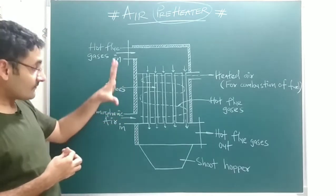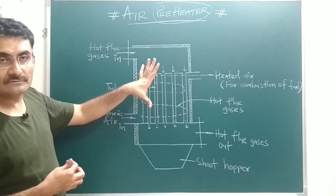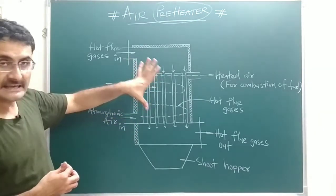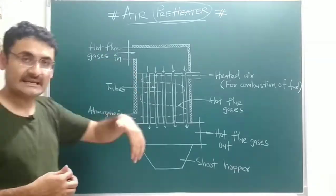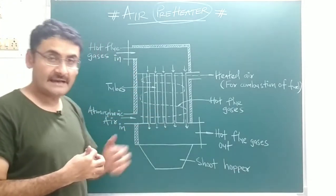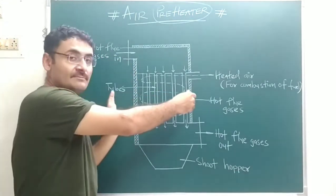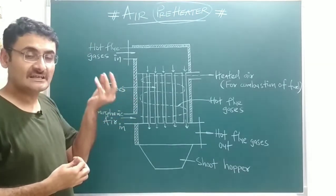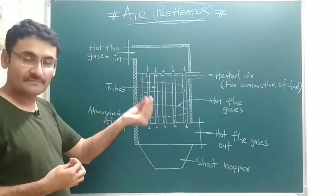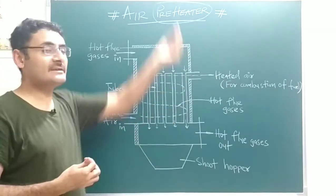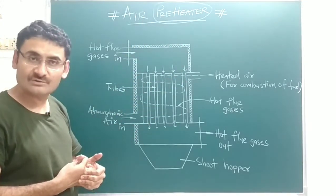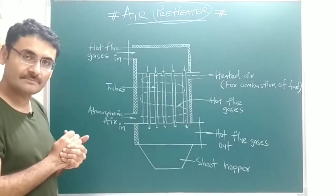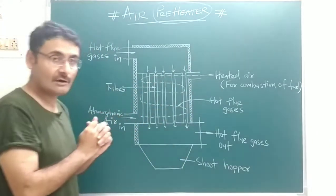Now we will discuss the location of this air preheater. Generally, this air preheater is located inside the chimney. As we know, inside the chimney the waste heat or hot flue gases are present, which are rejected into the atmosphere. The air preheater is located inside this chimney.